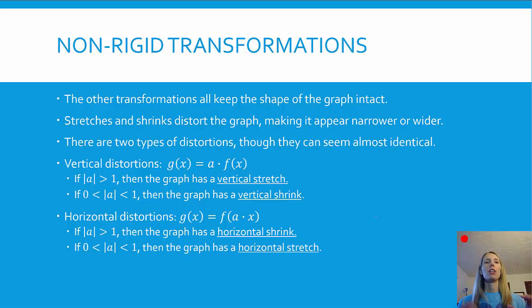There are two types of stretches and shrinks and both of them are called non-rigid transformations. What that means is that the shape will change. So all the other transformations we've talked about, whether it's a vertical shift or horizontal shift or reflection, that kept the same basic shape. It just either moved it around or reflected it over an axis. But these are non-rigid, meaning it's going to change the shape.